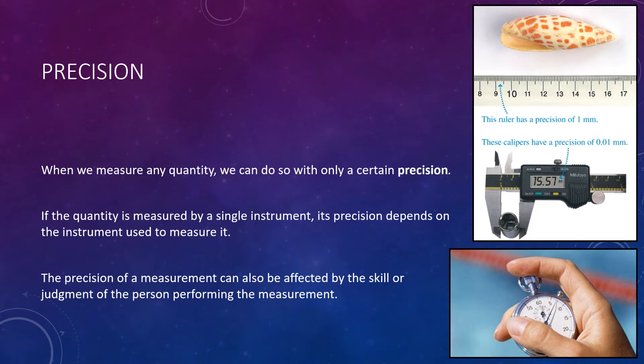However, the precision of a number can also be affected by the skill or judgment of the user performing the experiment or measurement. For example, even with something as simple as a ruler, you might not be as precise as you might think. Sure, the ruler itself has a precision of about 1 millimeter, but maybe you're viewing the ruler from an angle. Maybe you're off to the side of it and looking at an angle, and so your perception of what line you're actually looking at could be skewed because of that.